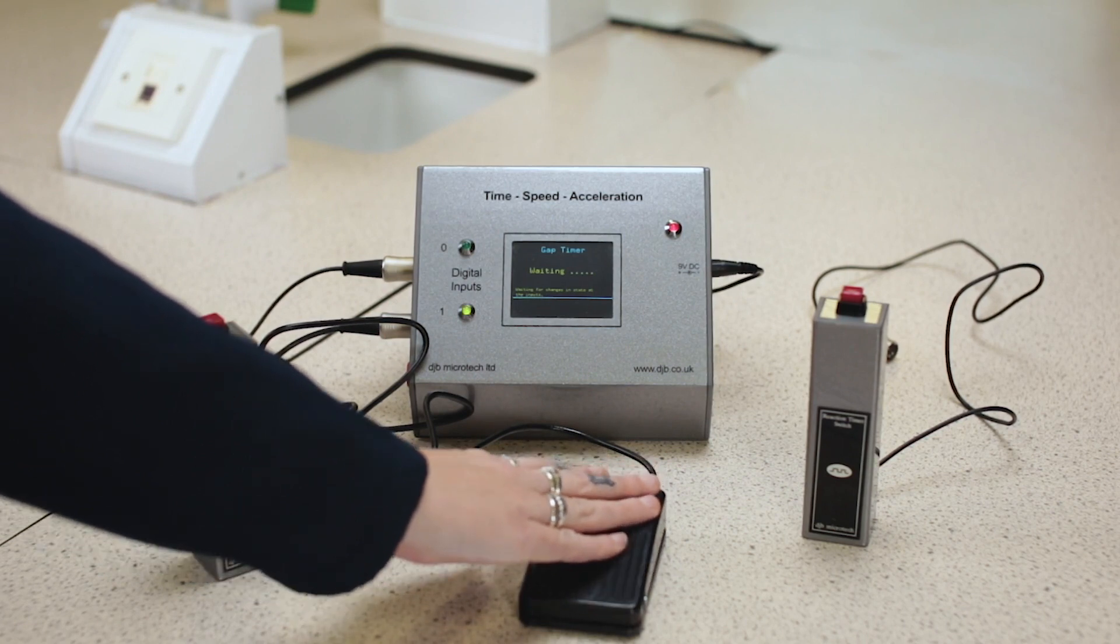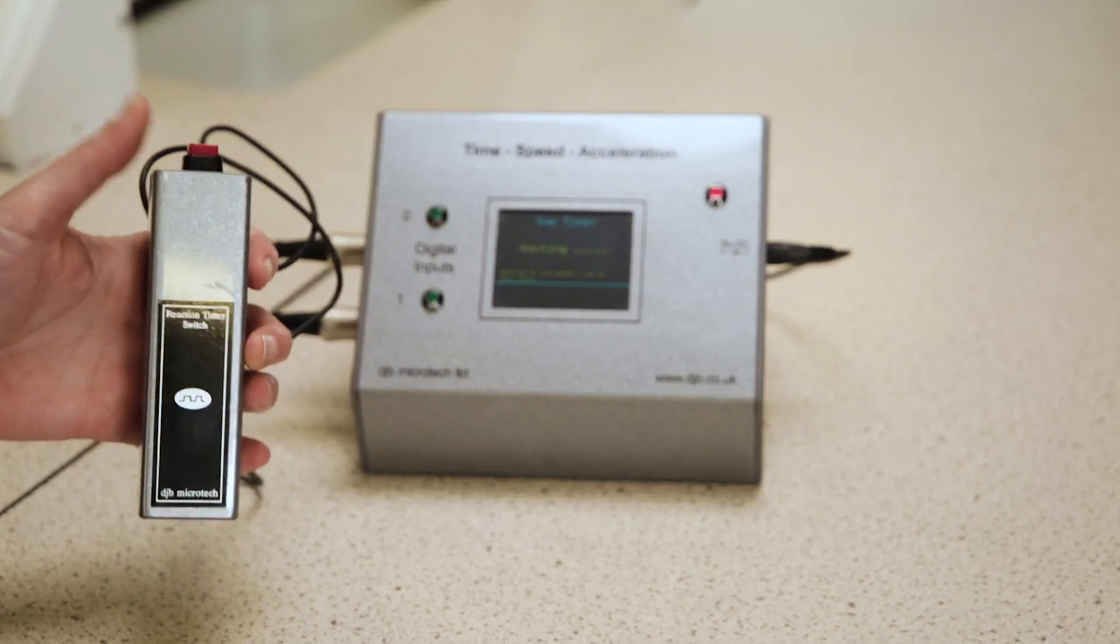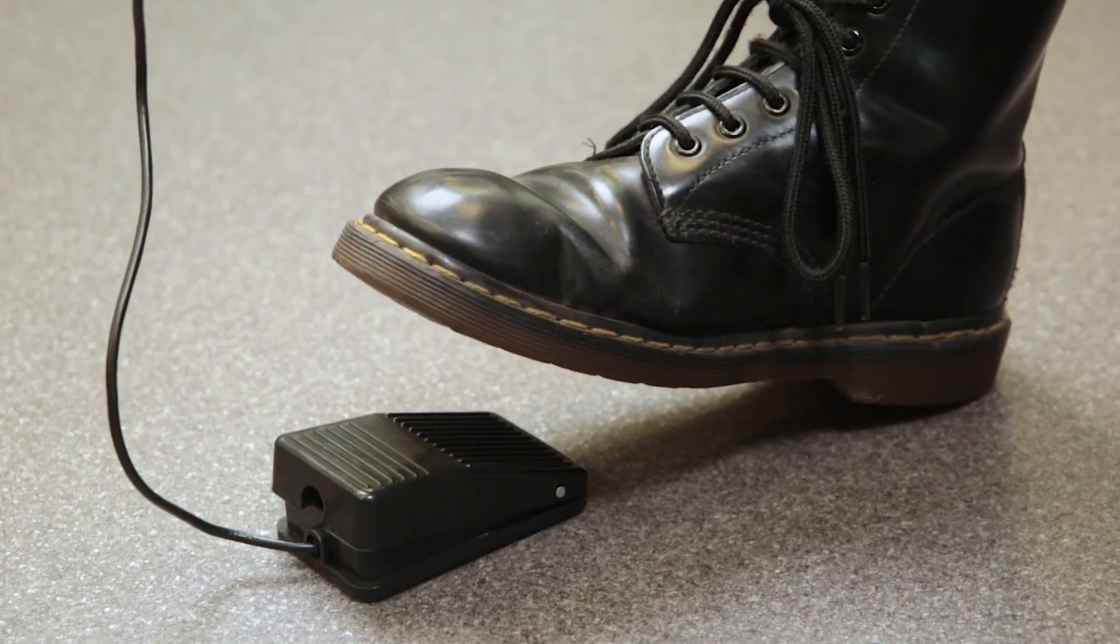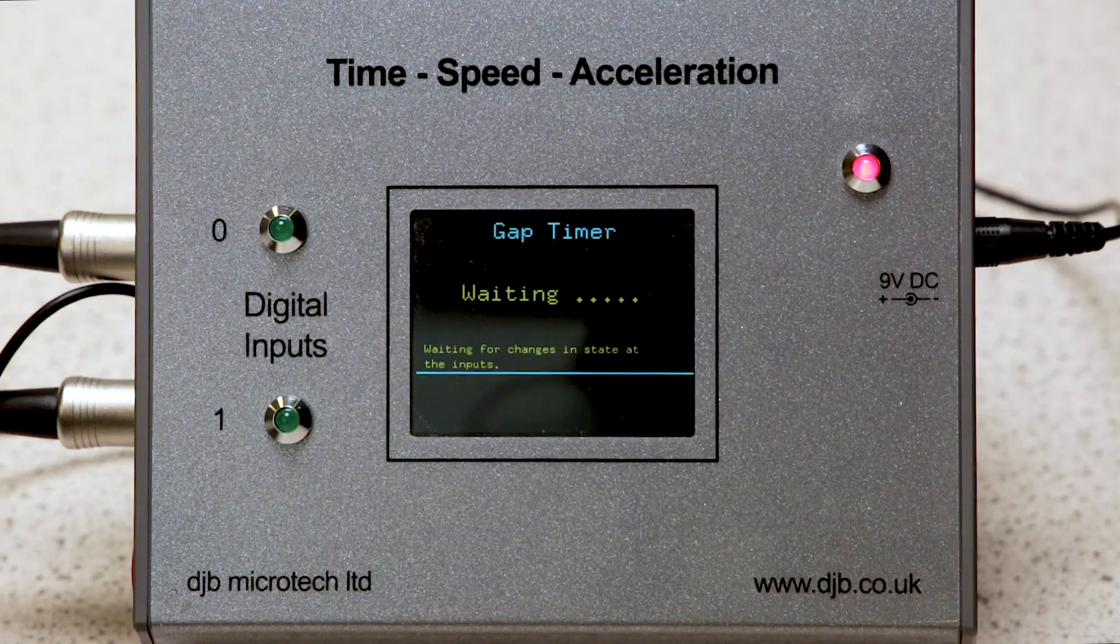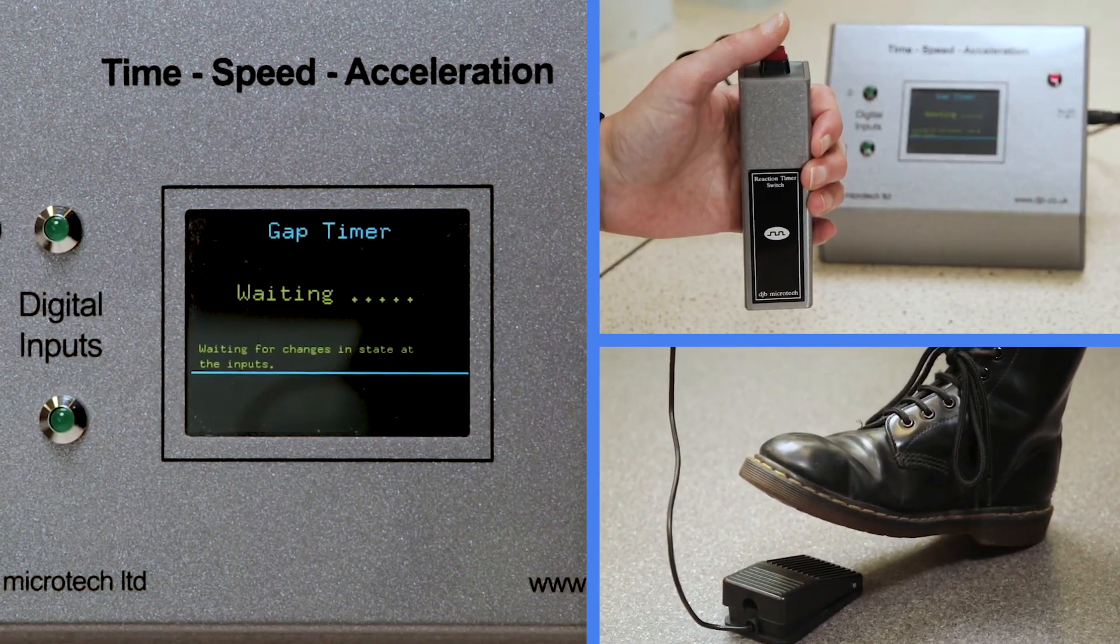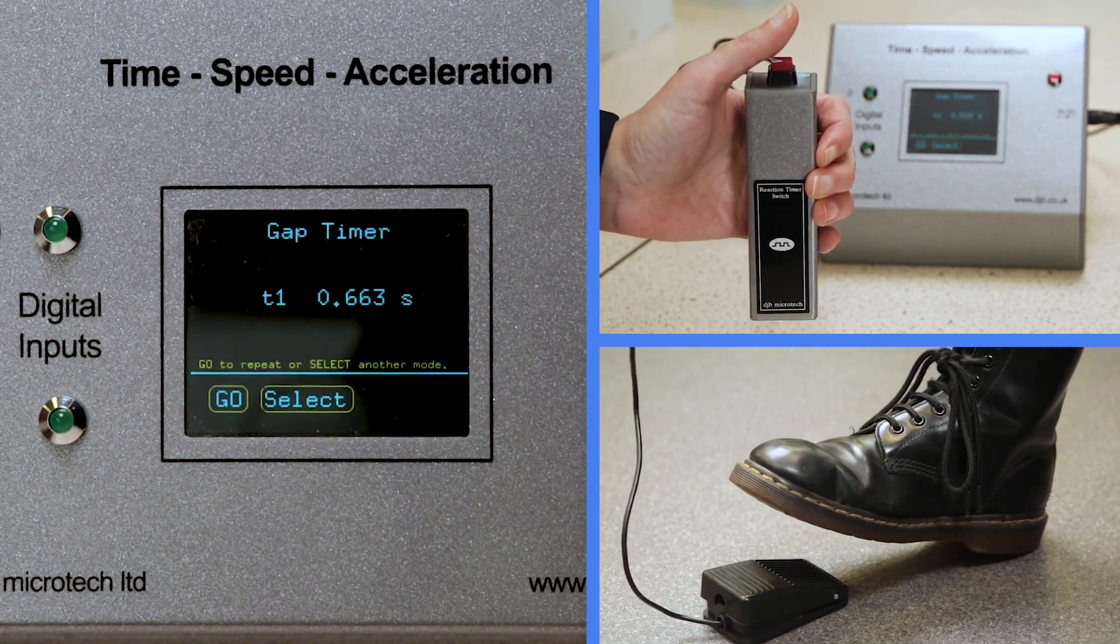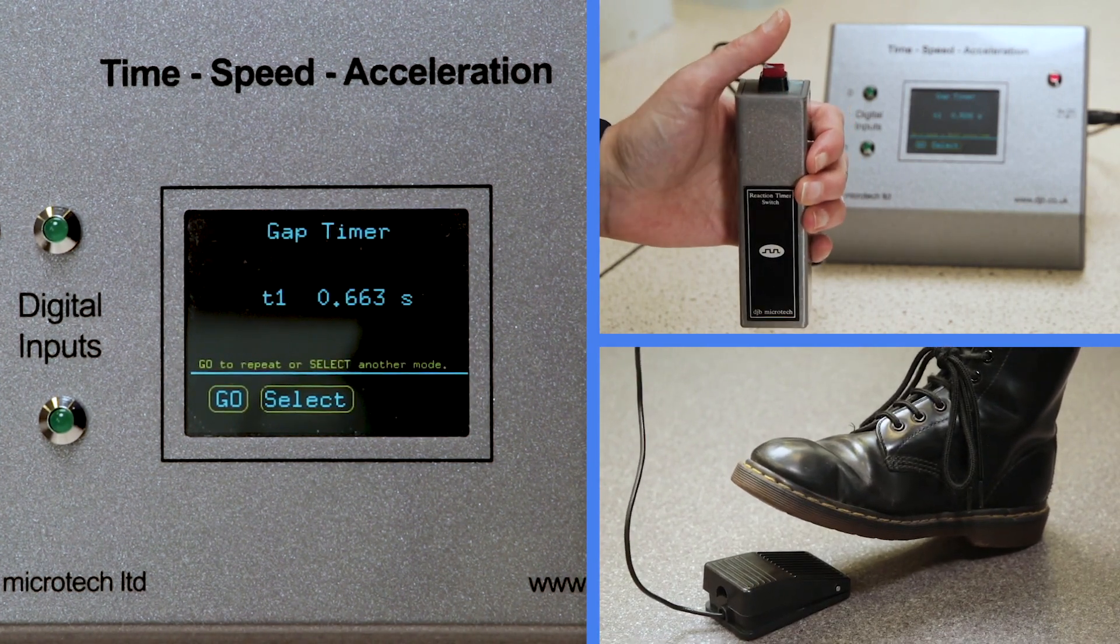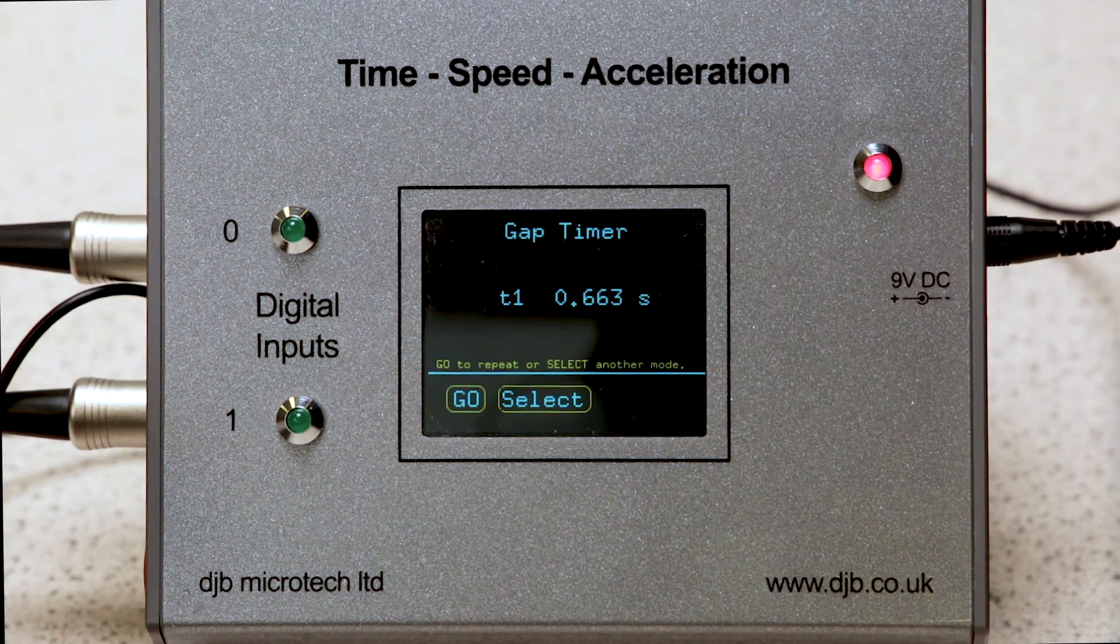Repeat the procedure using one pupil to control the channel 0 input, which is then connected to the hand switch, and the second student controls the foot switch. As soon as the light for the channel 0 input is illuminated, the second student should press the foot switch to measure their reaction times. Hand and foot reaction times can then be compared.